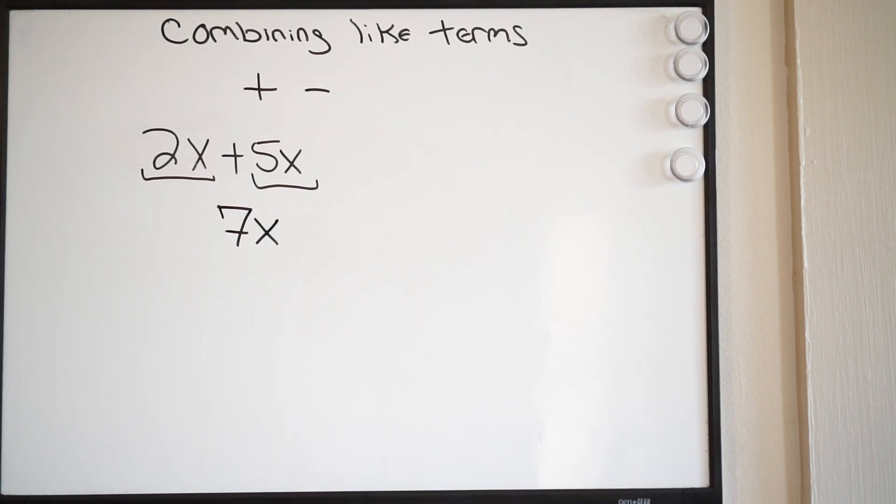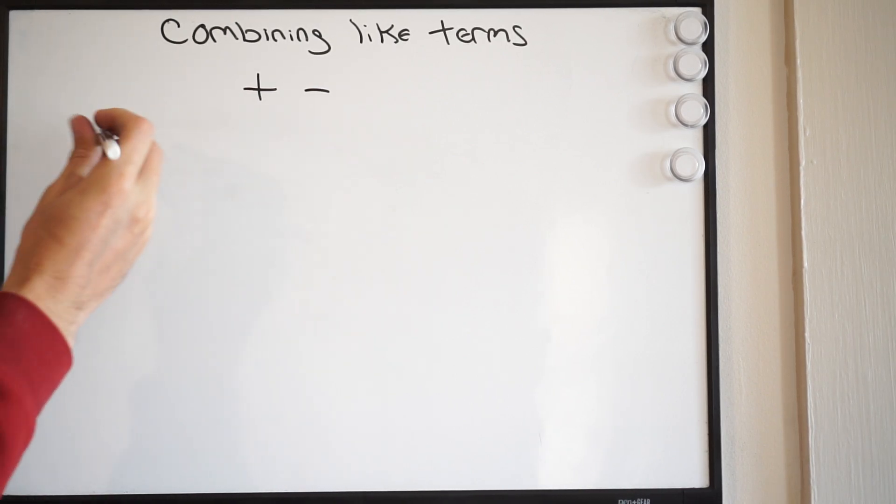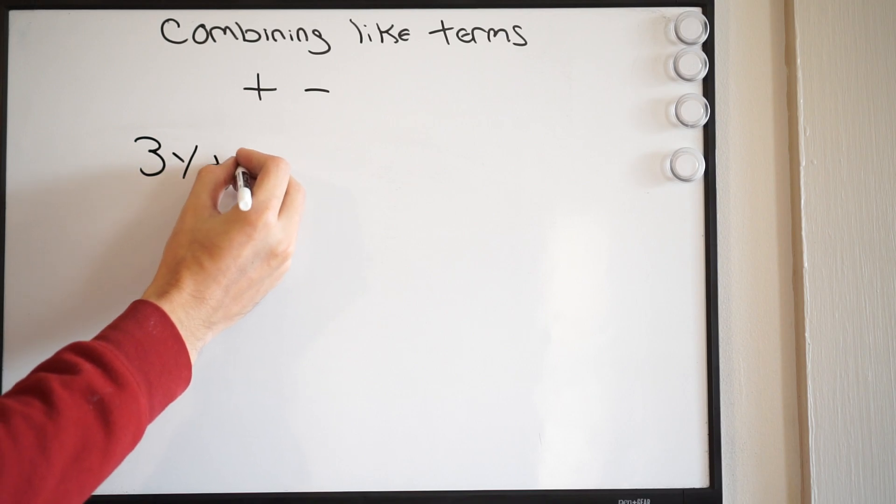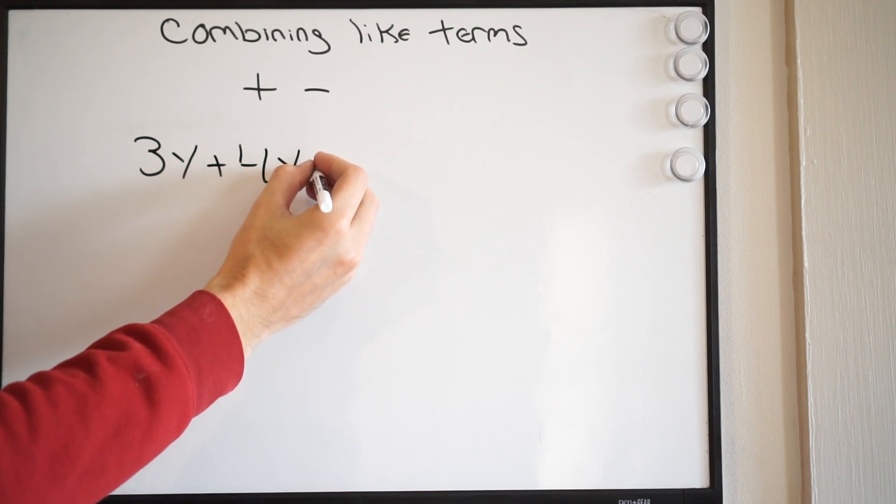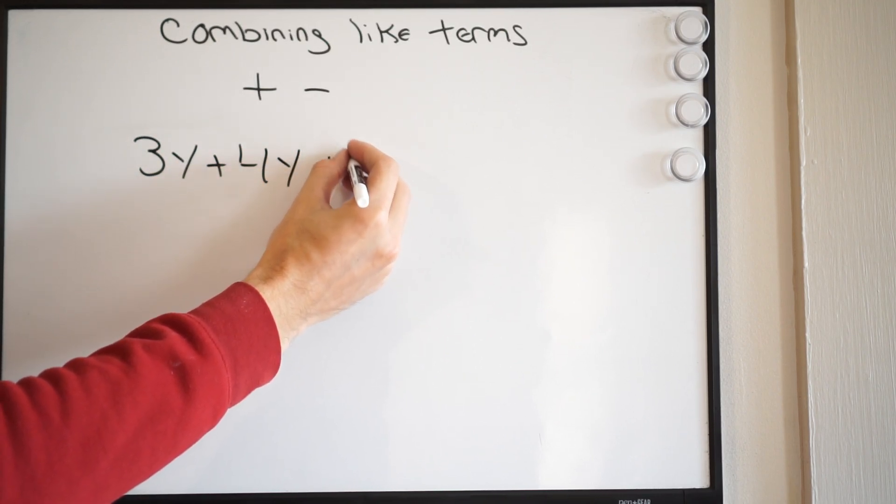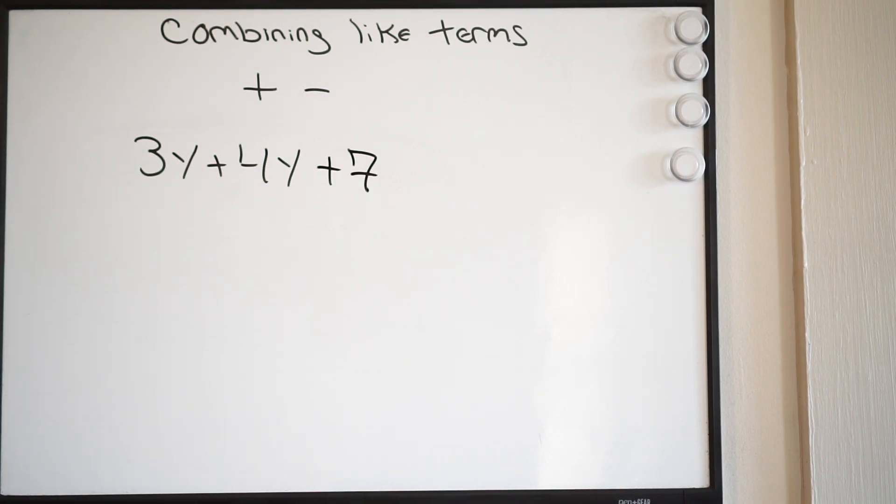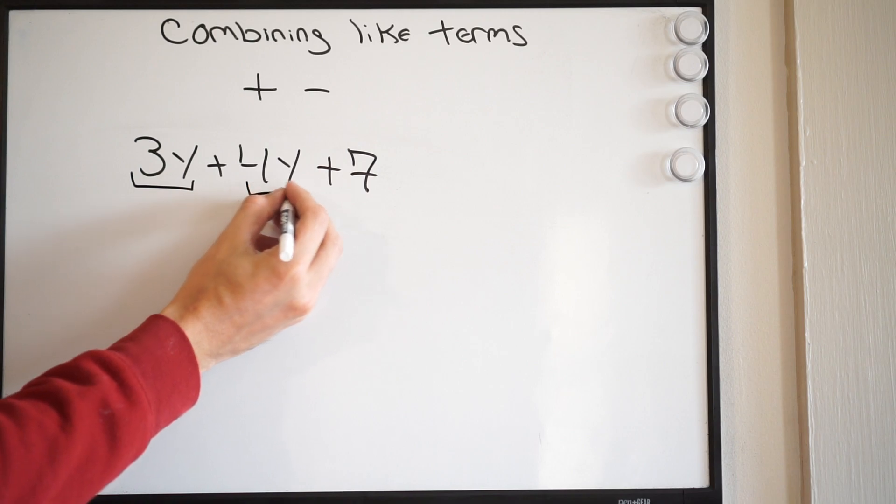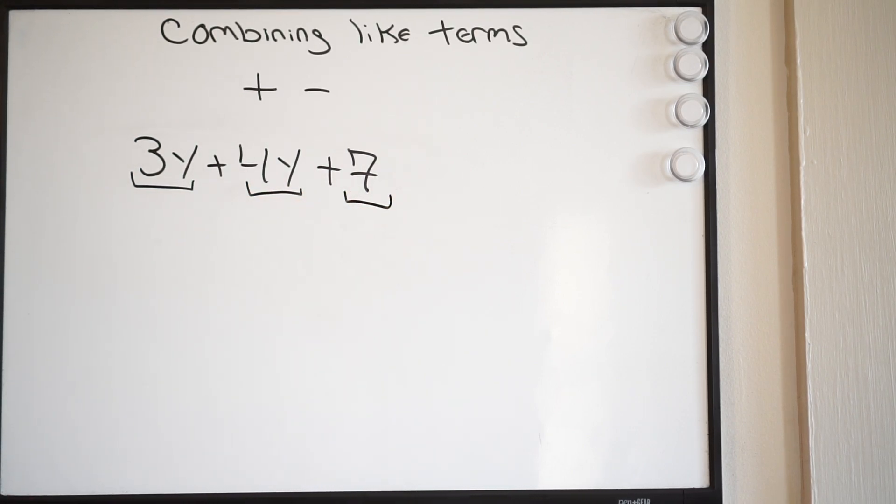Let's try another example here. What if I had 3y plus 4y plus 7? So looking here, how many terms? Well, I have a term here, here, and here. So we have three terms.